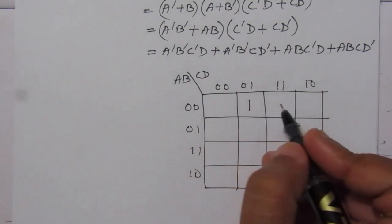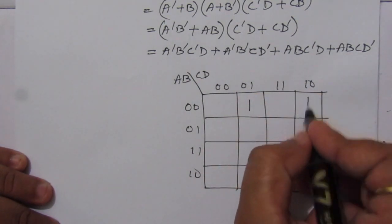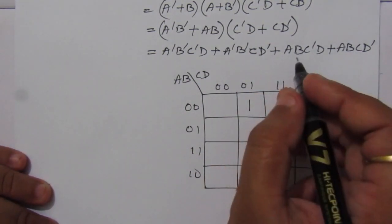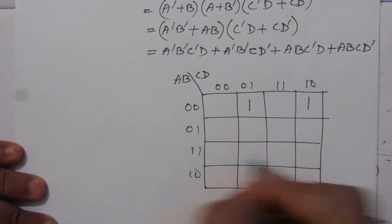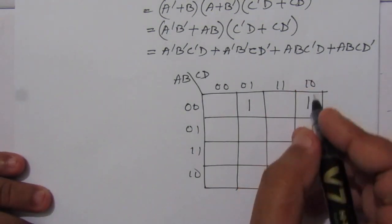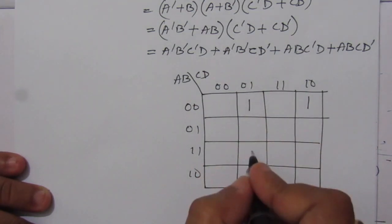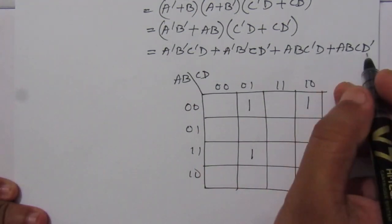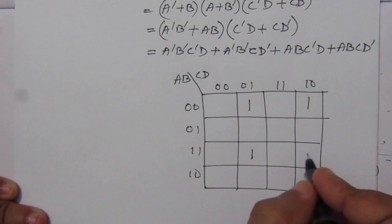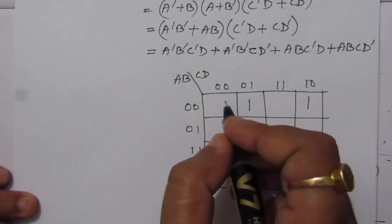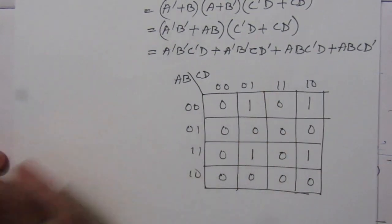Ā·B̄·C·D̄: Ā·B̄ is this row, C·D̄ is this column, so we place a 1 there. Then A·B·C̄·D: A·B is this row, C̄·D is the second column, place a 1 there. Then A·B·C·D̄: A·B is this row, C·D̄ is this column, place a 1 there. All other values will be zero.